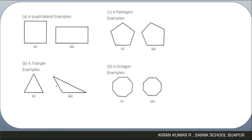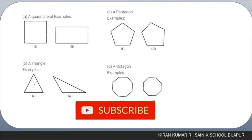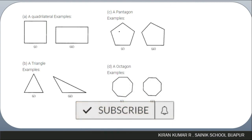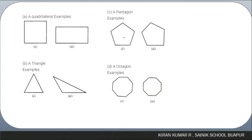Two different triangles are given as further examples. For pentagons, two pentagons with all sides different are shown — not regular pentagons. For octagons, one figure has unequal sides — not a regular octagon — and the second has equal sides, making it a regular octagon.